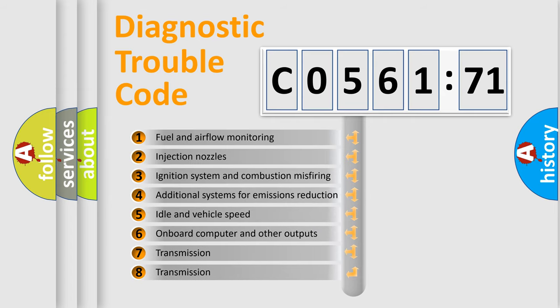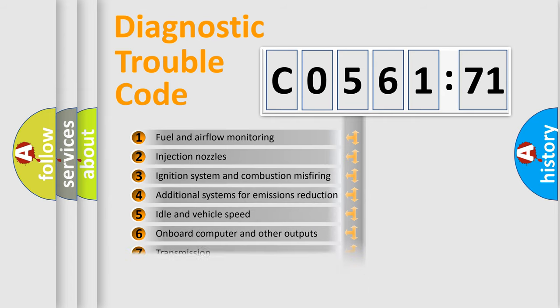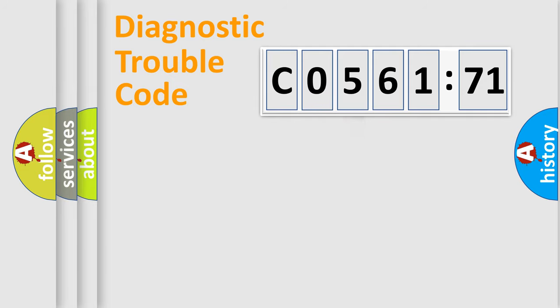The third character specifies a subset of errors. The distribution shown is valid only for the standardized DTC code.